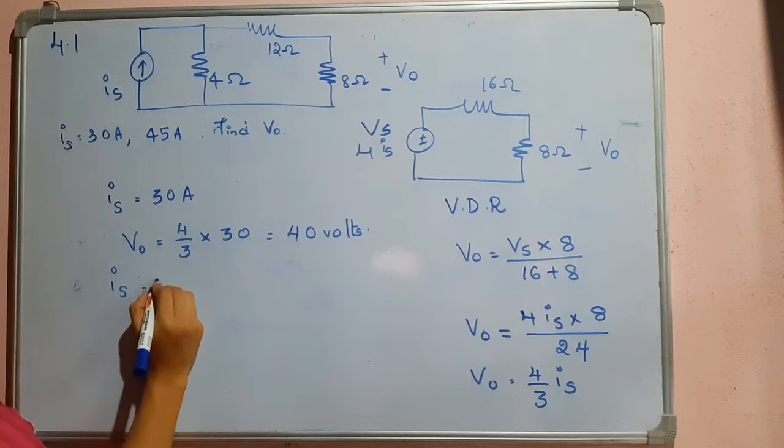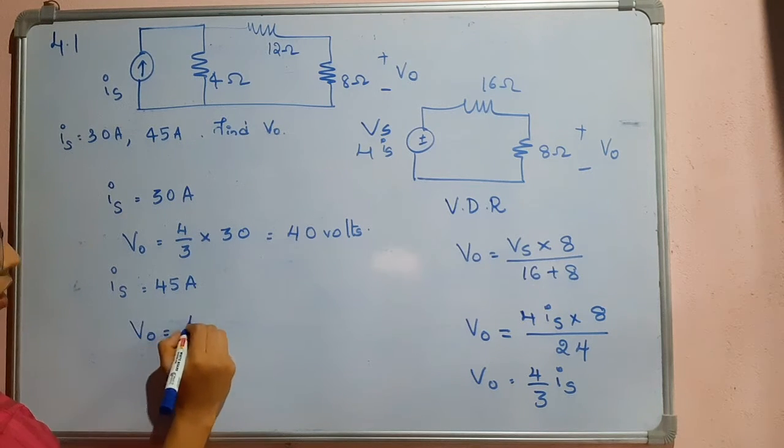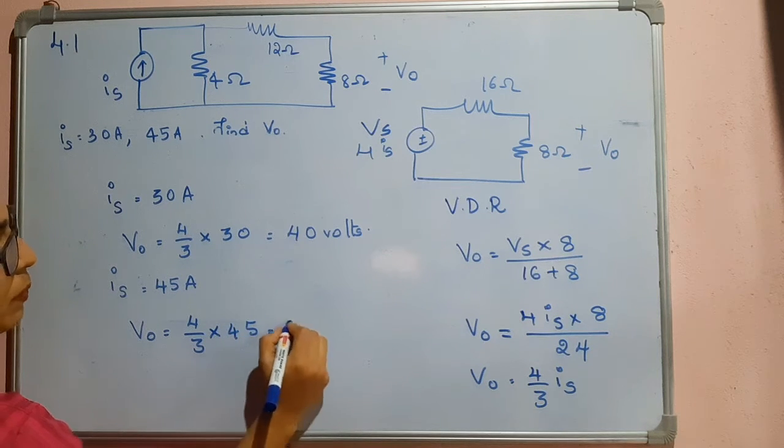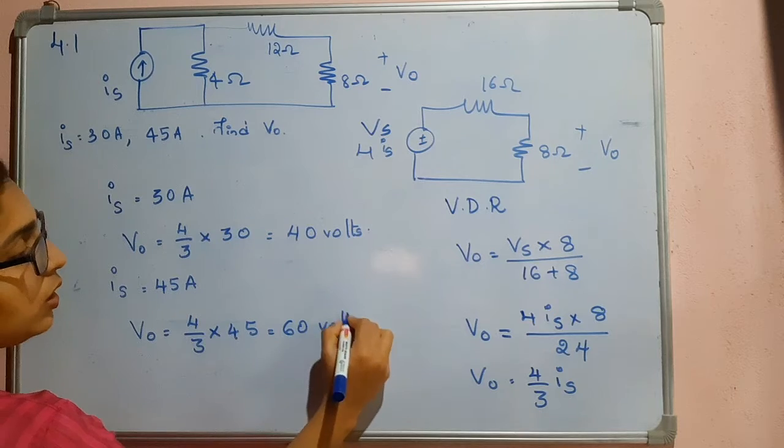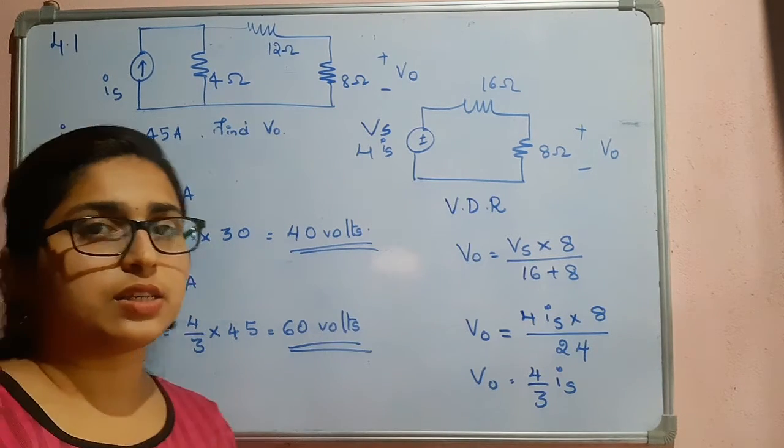Now when IS is equal to 45 amperes, I will substitute this here: 4 by 3 into 45. So this one will be 60 volts. So this is the answer to this question.